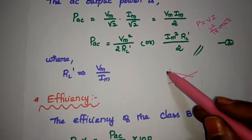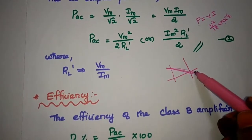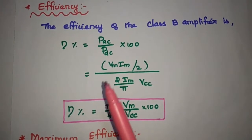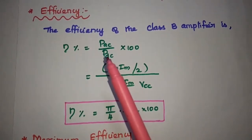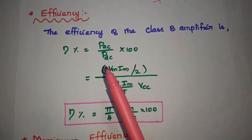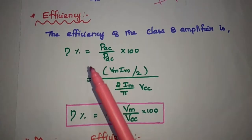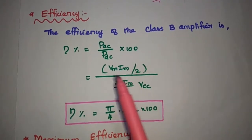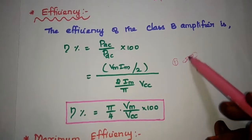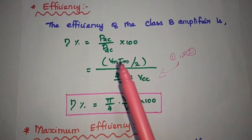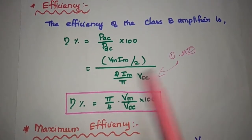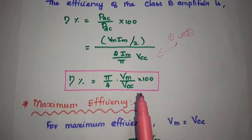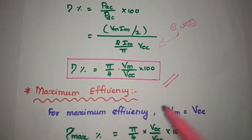The efficiency of the class B amplifier is the ratio of AC output power to DC output power. In percentage: η = (AC output power / DC output power) × 100. Substituting the first and second equations, the AC output power is Vm × Im/2, and the DC output power is (2Im/π) × VCC. This simplifies to η = (π/4) × (Vm/VCC) × 100. This is the efficiency formula for the push-pull class B amplifier.